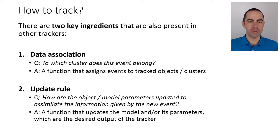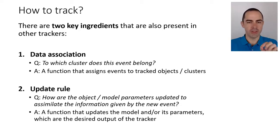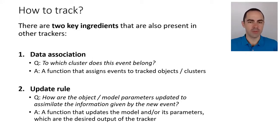This update rule could be a heuristic or it could be more focused on minimizing some objective function or criteria. In the case of the blob tracker, the data association assigns the event to the nearest blob, and the update rule simply drags the centroid and adjusts the size of the blob accordingly.